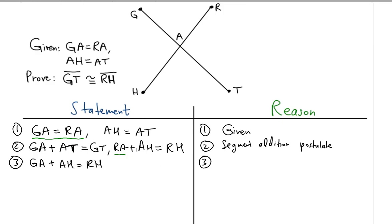We're just rewriting this equation: instead of RA, we're writing GA in the first term because GA is equal to RA. This is substitution property of equality.